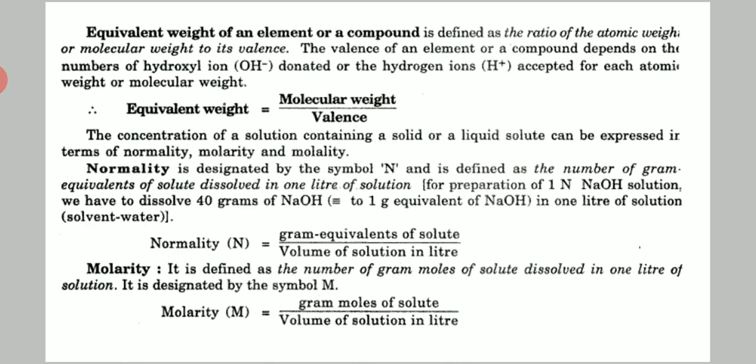In another example, we take sulfuric acid H2SO4. It dissociates into 2H+ and SO4²−, so the valency is 2. The equivalent weight equals the molecular weight of H2SO4 divided by its valency. The molecular weight of H2SO4 is 98 and the valency is 2, so the equivalent weight is 49 for H2SO4.